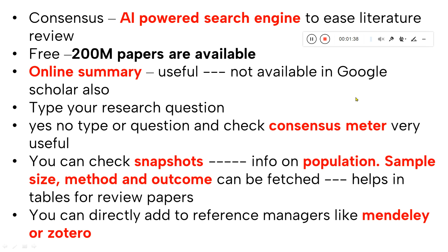They also give a small snapshot where you get different information regarding population, sample size, method, and outcome — all within just a few lines or words. This is very useful when you are doing review papers and filling tables. The snapshots can be very helpful for filling those tables in your review paper, depending on how you explore it.